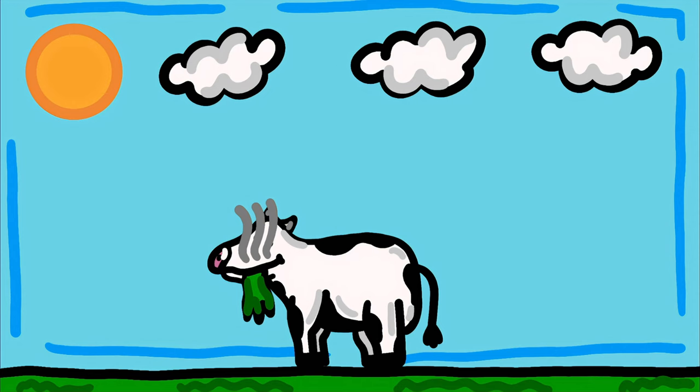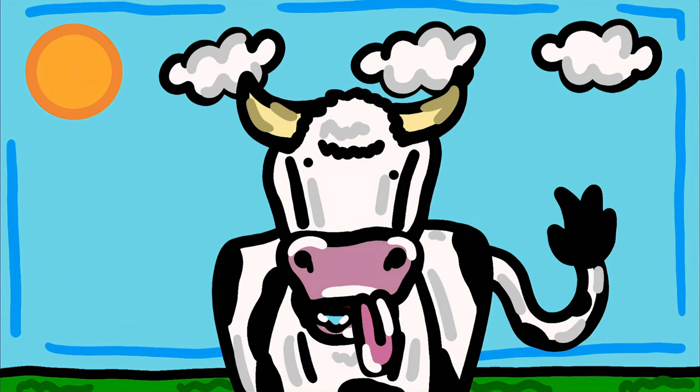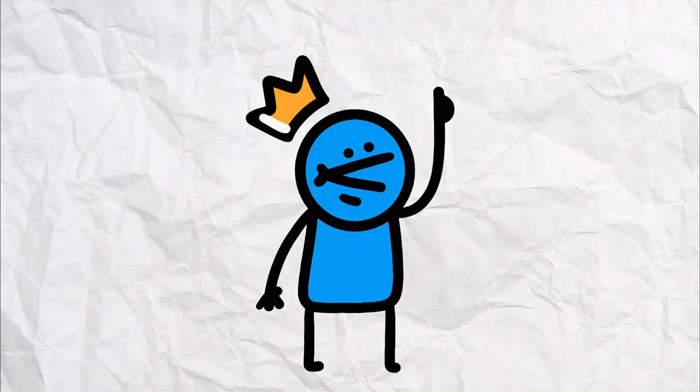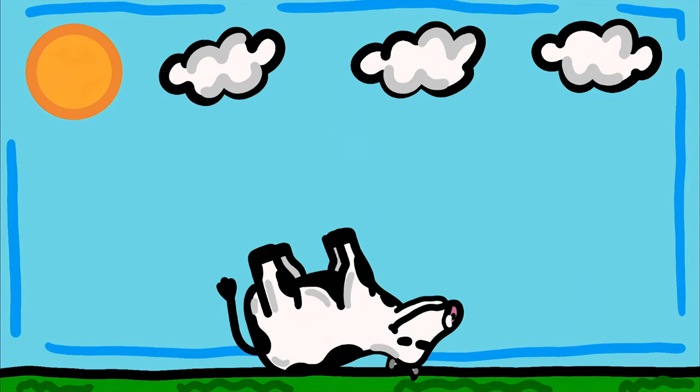Cattle typically become infected through the ingestion of prion-contaminated food, often from the remains of other infected cattle. The disease leads to brain damage, causing symptoms like uncoordinated movements, behavioral changes, and ultimately death.